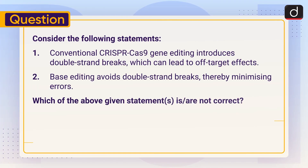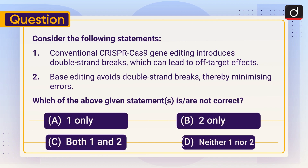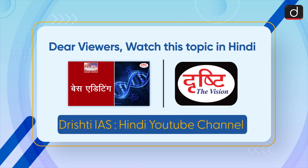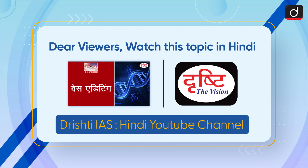Now it's time for the practice question. Consider the following statements: One — conventional CRISPR-Cas9 gene editing introduces double-strand breaks which can lead to off-target effects. Two — base editing avoids double-strand breaks, thereby minimizing errors. Which of the above statements is or are correct: one only, two only, both one and two, or neither one nor two? Send your answer in the comment section. Stay tuned for the next episode. Thanks for watching, and have a great day. You can also watch this topic in Hindi on our Drishti IAS Hindi YouTube channel.